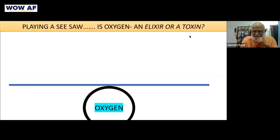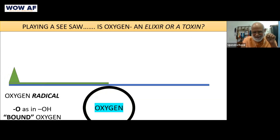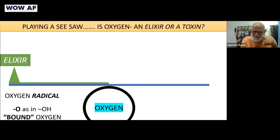Here is a diagram with oxygen at the fulcrum — this is the oxygen radical. I have put one bond O, and the second bond is occupied by something — here it is hydrogen. This is bound oxygen. Bound oxygen is elixir. That is Pranwai.